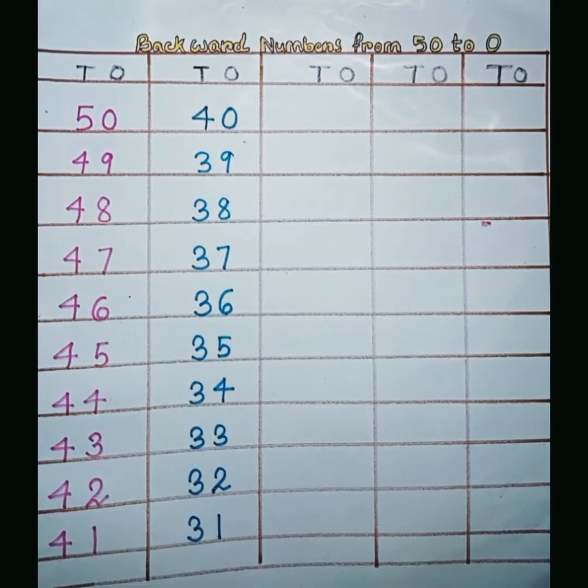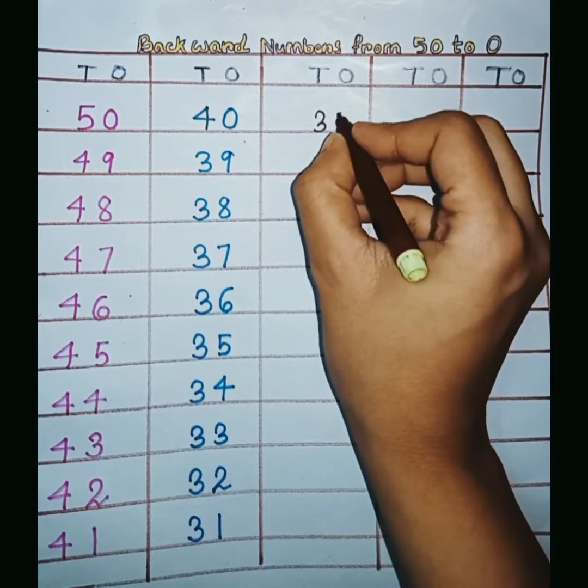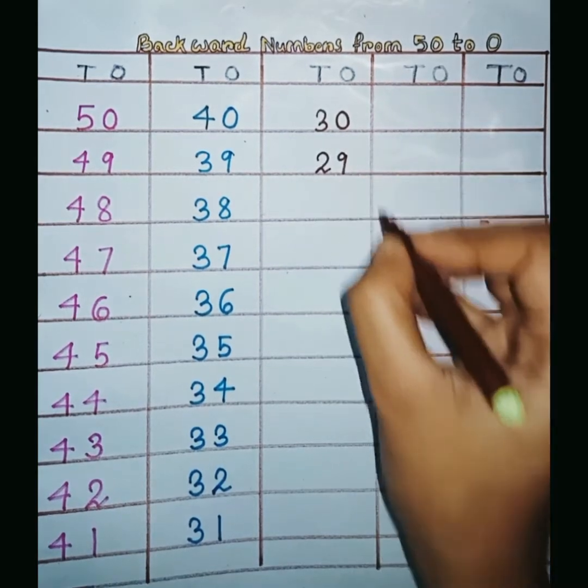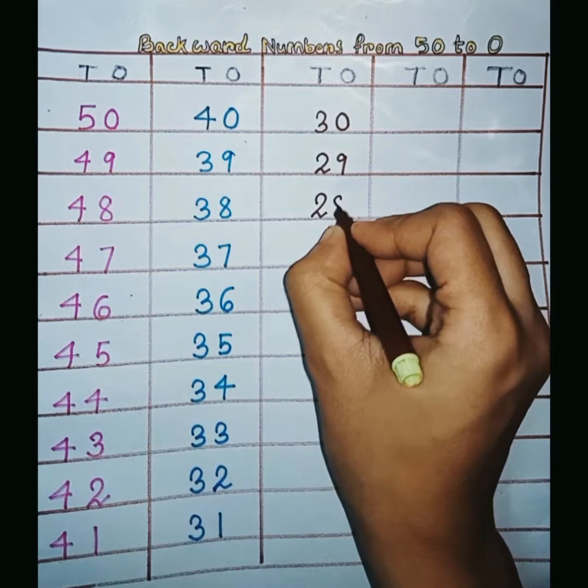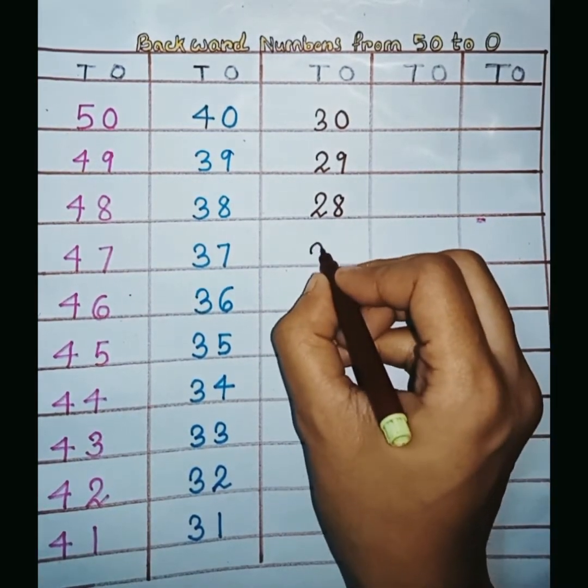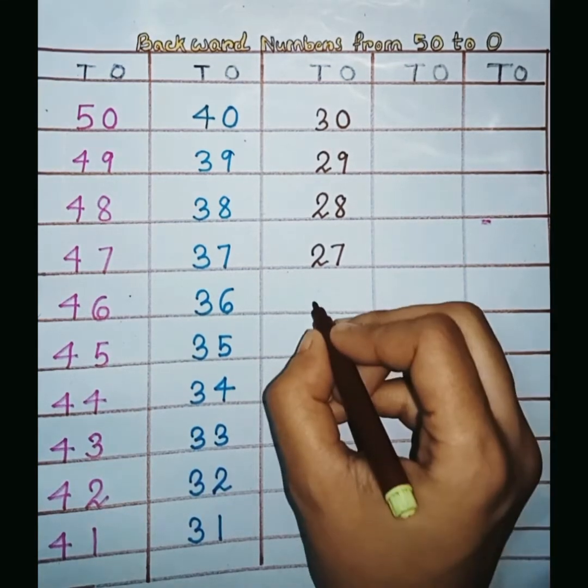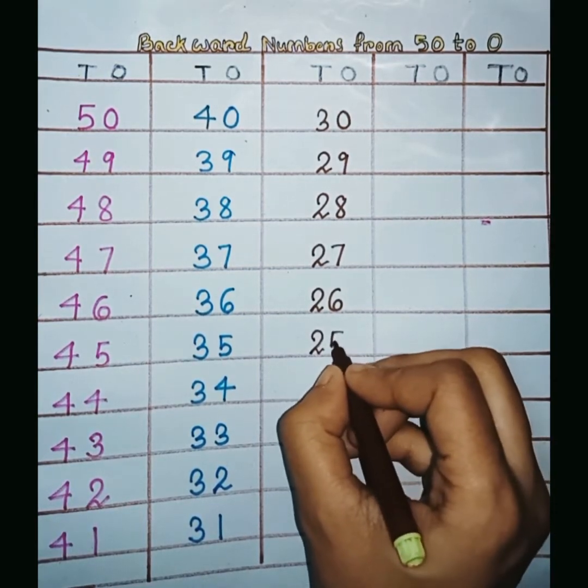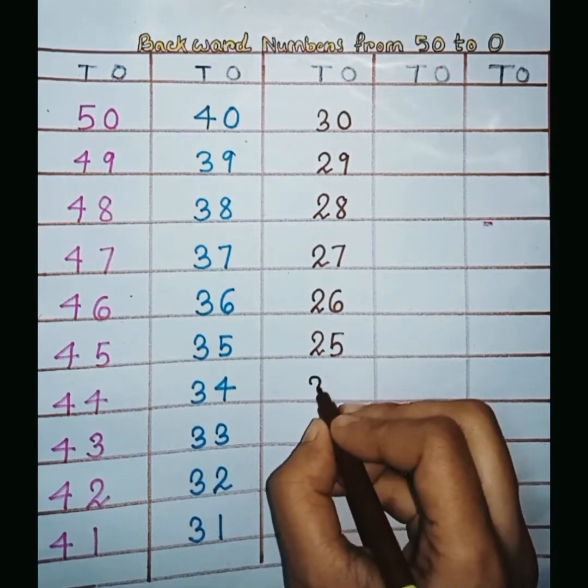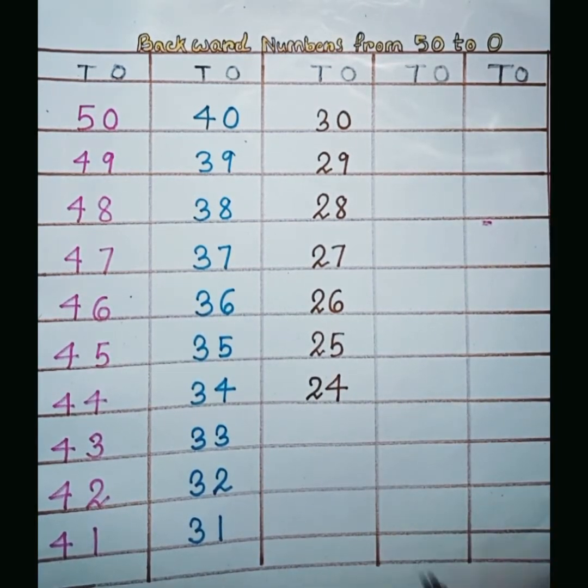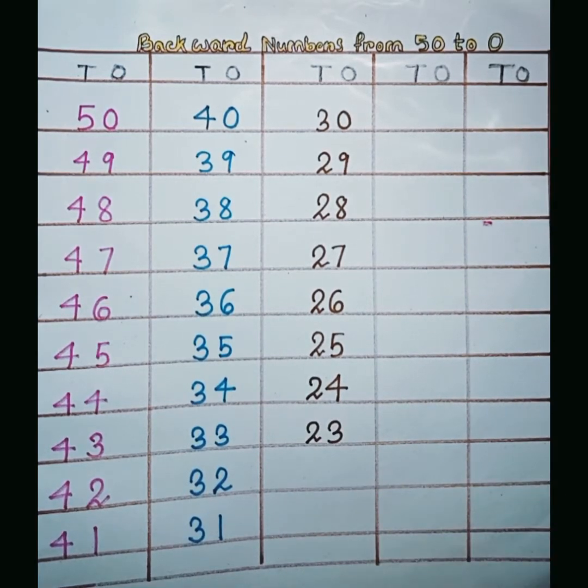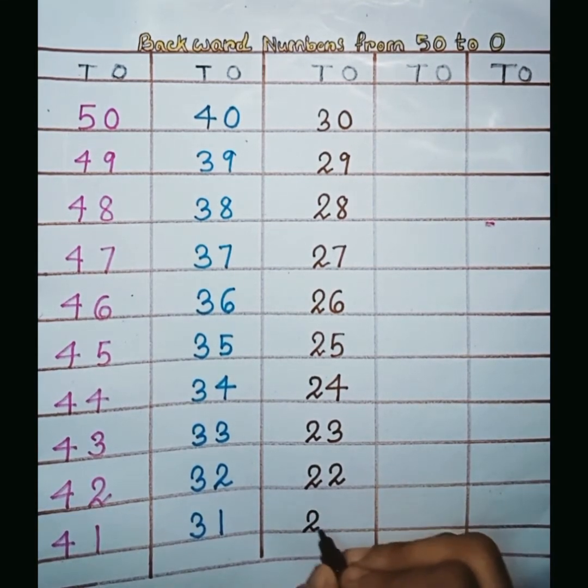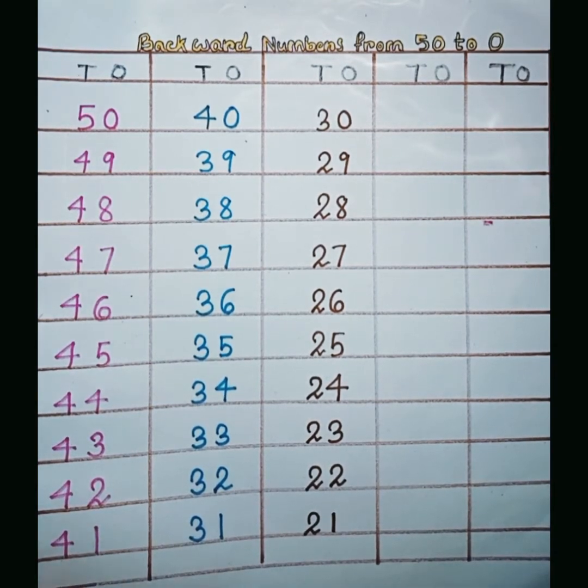we write 30. 30, 2, 9, 29. 2, 8, 28. 2, 7, 27. 2, 6, 26. 2, 5, 25. 2, 4, 24. 2, 3, 23. 2, 2, 22. 2, 1, 21. Next,